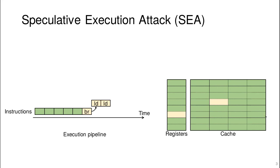Any side effects from the speculated instructions become visible — for instance, the side effects caused by load instructions. More interestingly, consider what happens when the prediction turns out to be wrong. In this case the CPU has to undo all the side effects of all instructions that are rolled back. From a program correctness perspective, this rollback is perfect — otherwise you'd have a CPU bug. But from a micro-architectural standpoint, there are certain traces that the CPU does not erase. For instance, data that was brought into the cache will remain in the cache after the rollback; the CPU does not undo that.